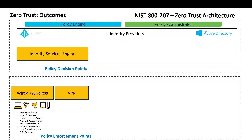That single policy decision point enforces across wired, wireless, and VPN. You can authenticate the individual, authenticate their device, and give them network access — zero trust access, agent or agentless, least privilege. You've got network admission control, micro-segmentation, posture and profiling, user and machine authentication, and multi-factor support. With VPN it's the same — you use the same policy decision point to validate zero trust and provide least privilege regardless of how you're connecting.